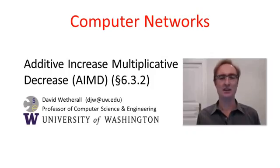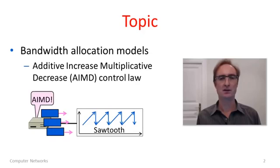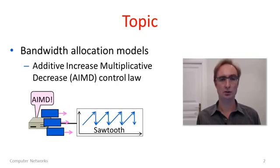G'day viewers. In this segment we'll talk about the additive increase multiplicative decrease algorithm. Our general topic here is bandwidth allocation. AIMD is one control law which has attractive properties for bandwidth allocation, which is why we're going to look at it in detail.